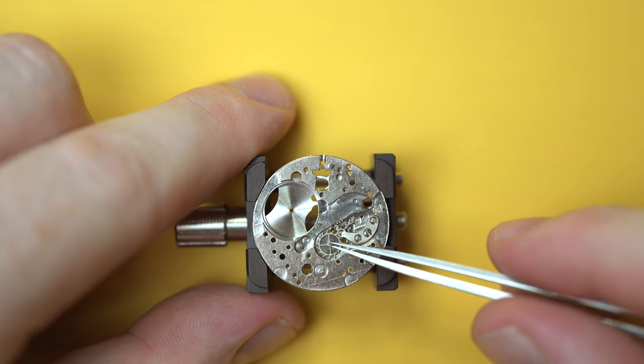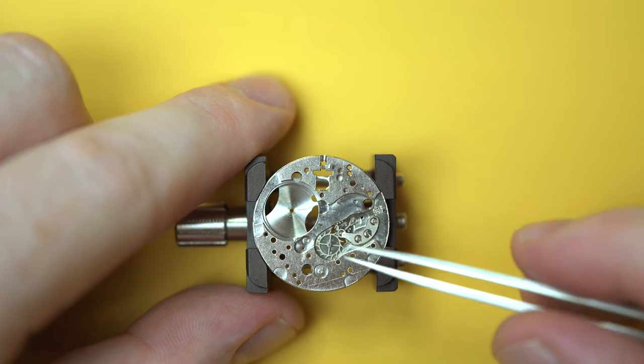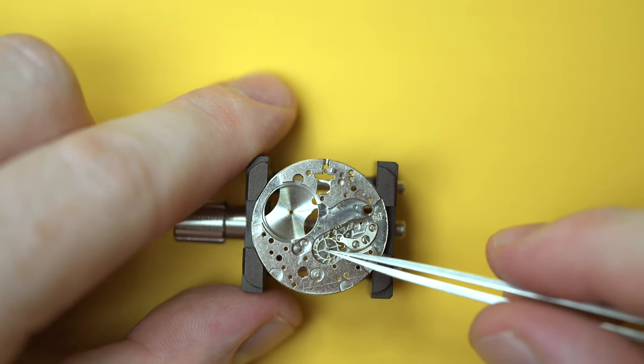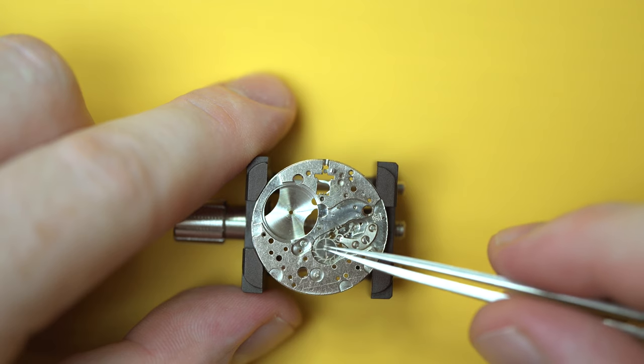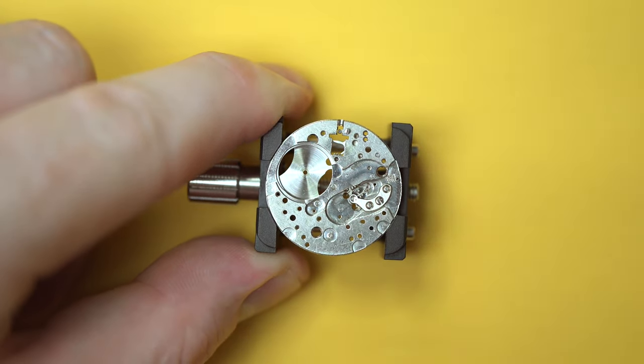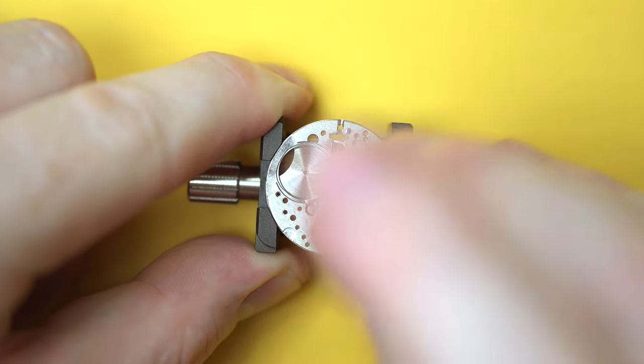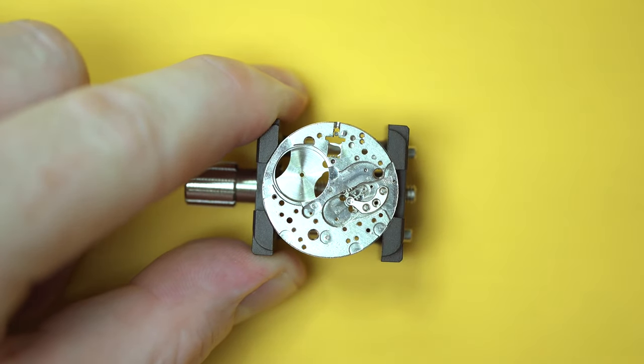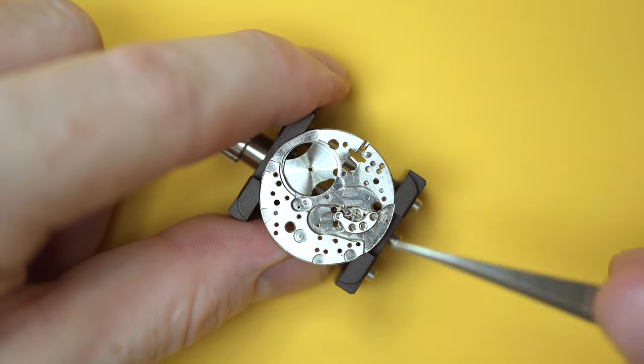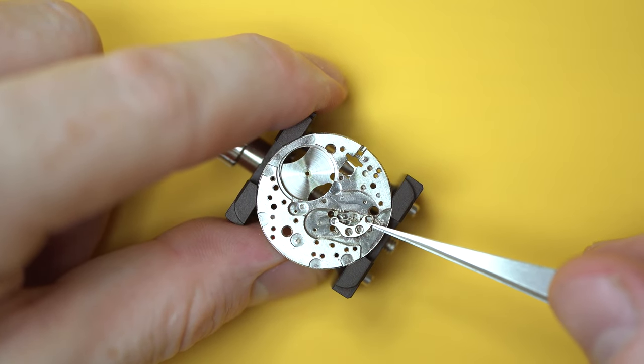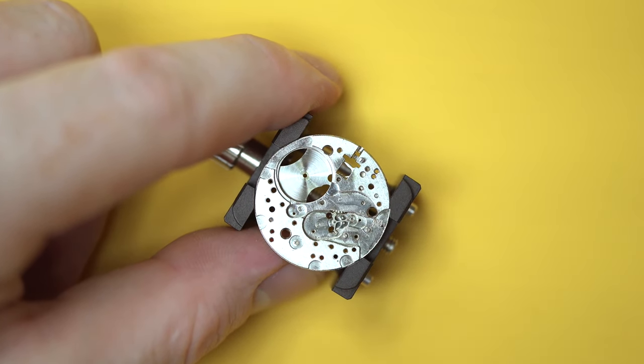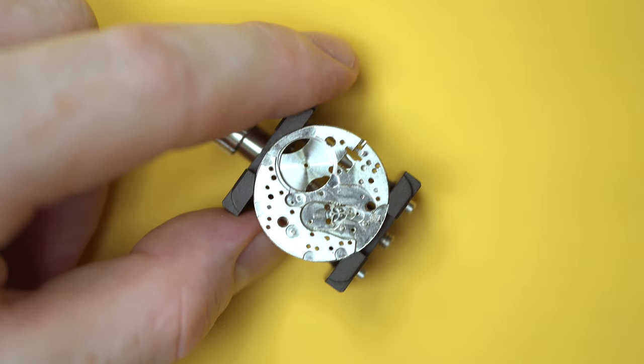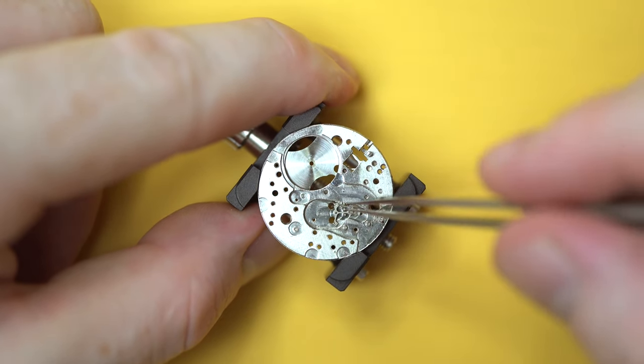Here we have the escape wheel. In a watch, there's three components you need to be really careful about. One is the escape wheel, which I just removed. One is the pallet fork, which is what I'm removing now. So that's the pallet bridge. And we've got the pallet fork just underneath. And the third is the balance, the one that I removed near the beginning. And the main reason is, the pivots on these three components are almost the size of a hair. So they'd be quite easily damaged.